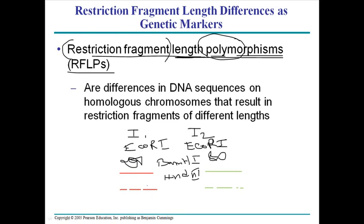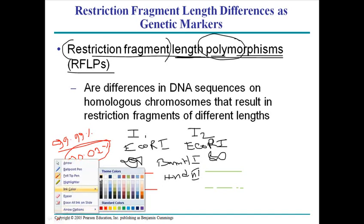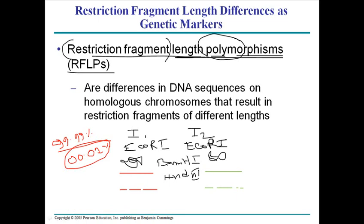The same restriction enzymes make a different number of cuts because a restriction enzyme cleaves at specific recognition sites. Between two humans we know there is above 99.99% similarity, but that still means there is about 0.01% dissimilarity. These small variations in genome construction lead to different sequences, and because of those different sequences, the same restriction enzymes will cut different lengths of DNA from each individual.